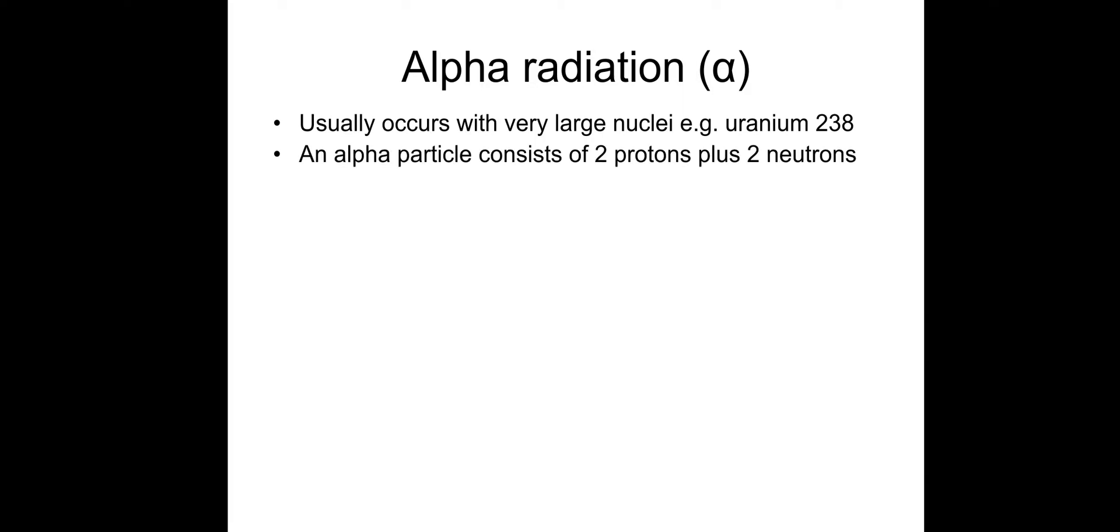So alpha radiation. This should be a recap from GCSE. It usually occurs with very large nuclei. For example, uranium-238 will undergo alpha decay. An alpha particle consists of two protons and two neutrons. It's a helium nuclei. So the proton number Z would decrease by two because it would emit the two protons. And the nuclear number, or the mass number, would indeed decrease by four.